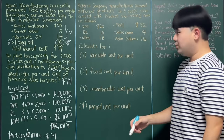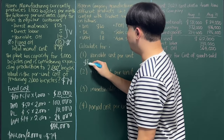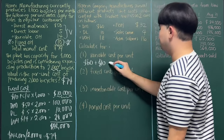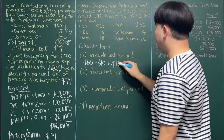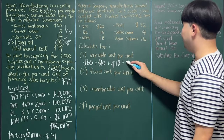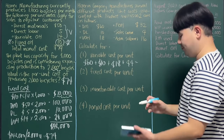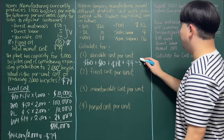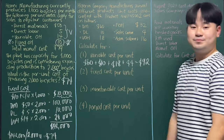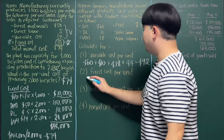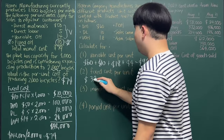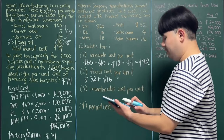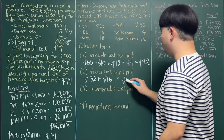Your variable cost includes: direct materials $60,000, direct labor $10,000, variable overhead $18,000, and sales commission $4,000. That gives $60,000 + $10,000 + $18,000 + $4,000 = $92,000. For your fixed cost per unit, that is fixed overhead of $32,000 and administrative salaries of $16,000: $32,000 + $16,000 = $48,000.